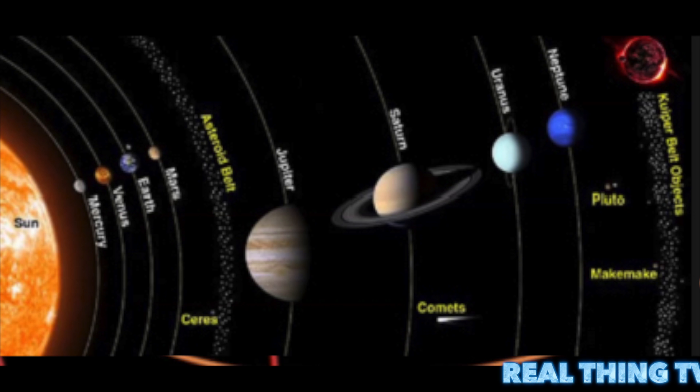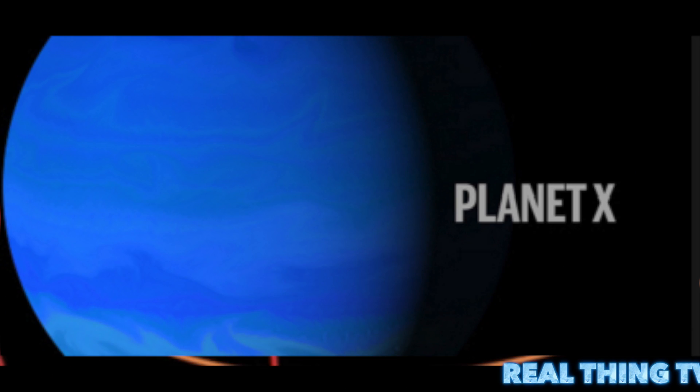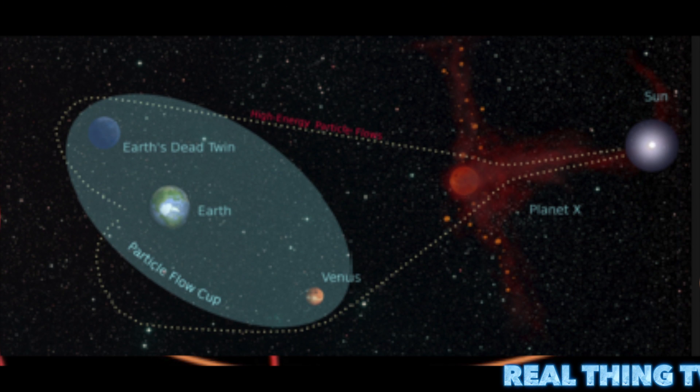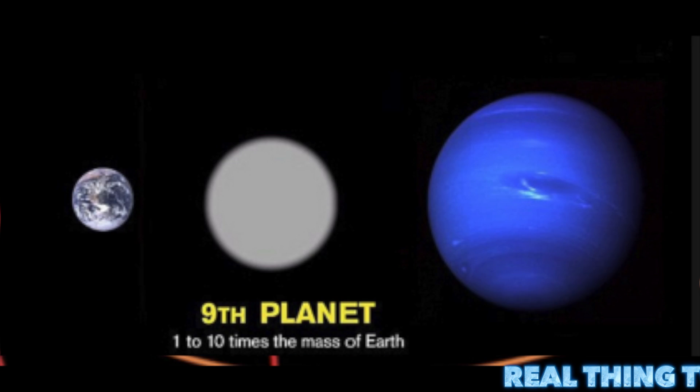Astronomers say Neptune-sized planet lurks beyond Pluto. The solar system appears to have a new ninth planet. Today, two scientists announced evidence that a body nearly the size of Neptune, but as yet unseen, orbits the sun every 15,000 years. During the solar system's infancy 4.5 billion years ago, they say, the giant planet was knocked out of the planet-forming region near the sun.